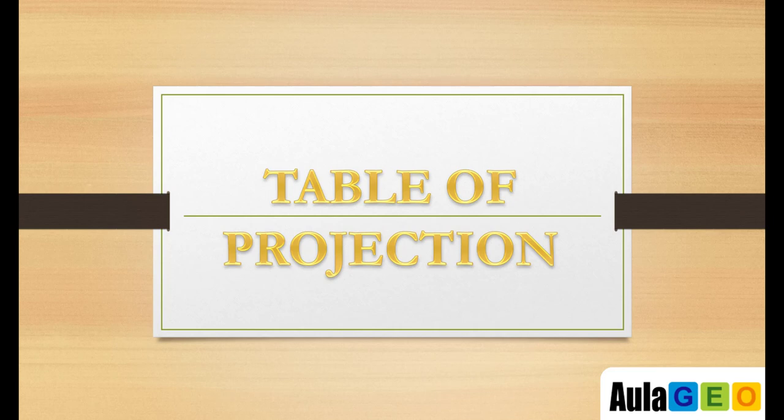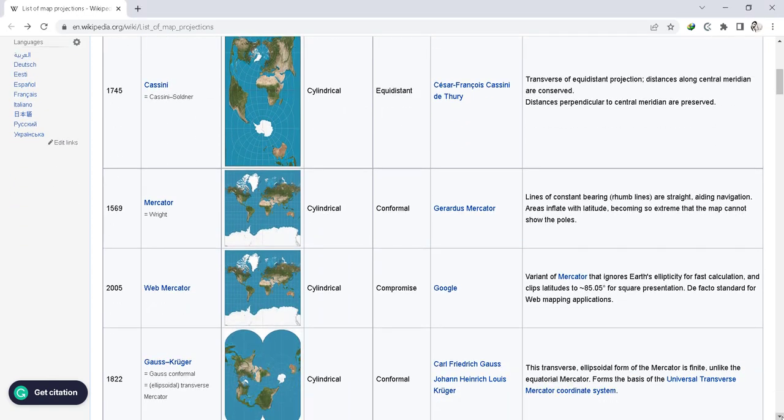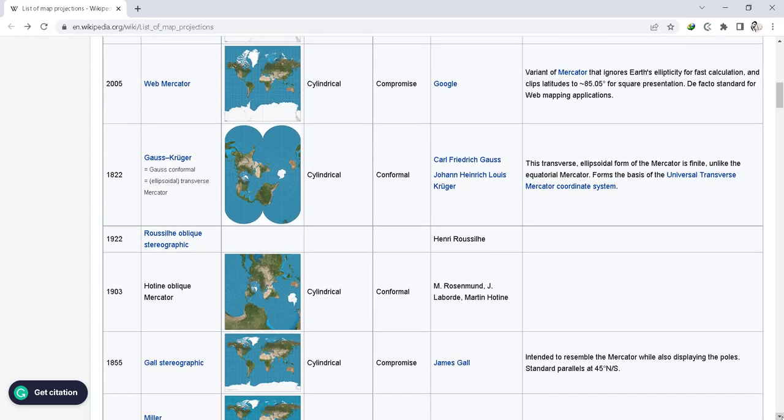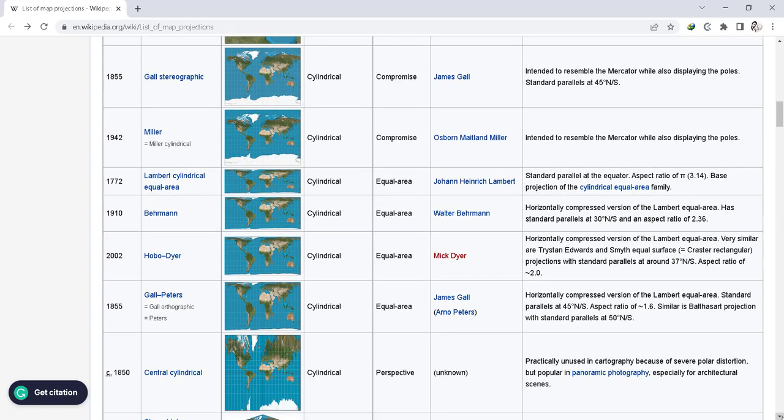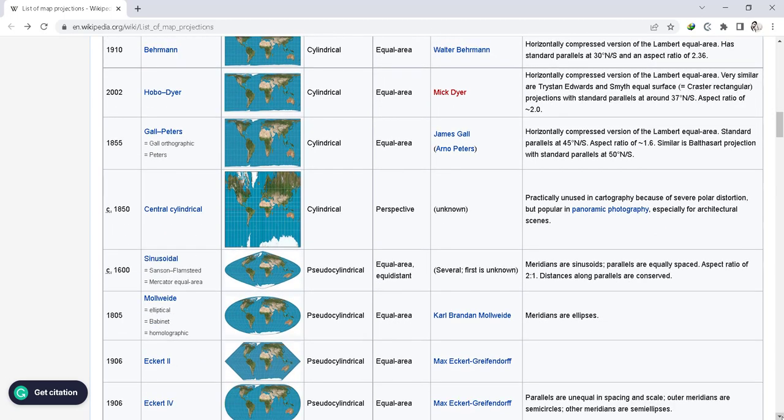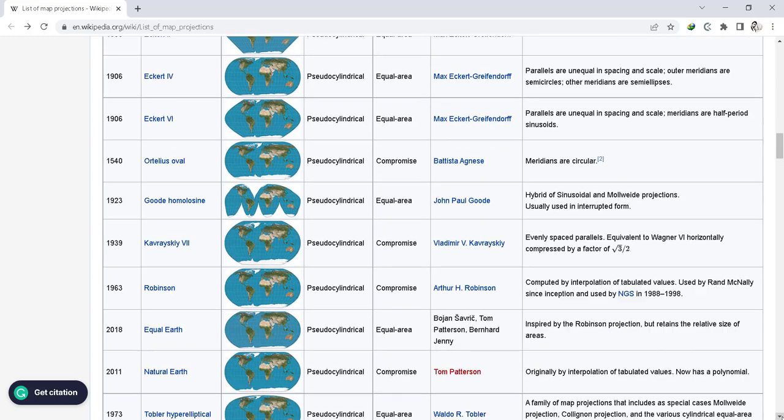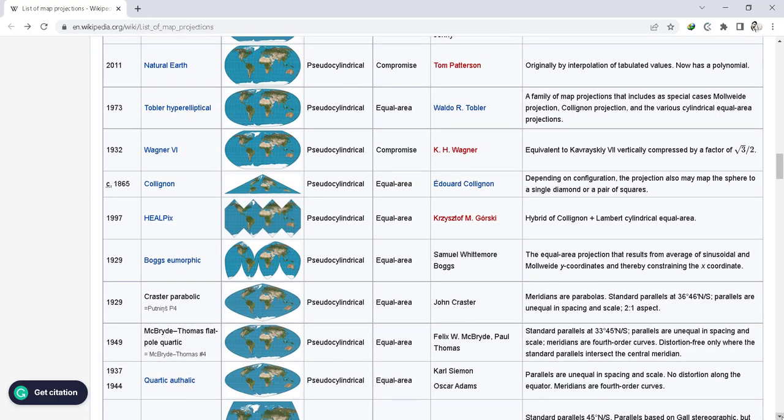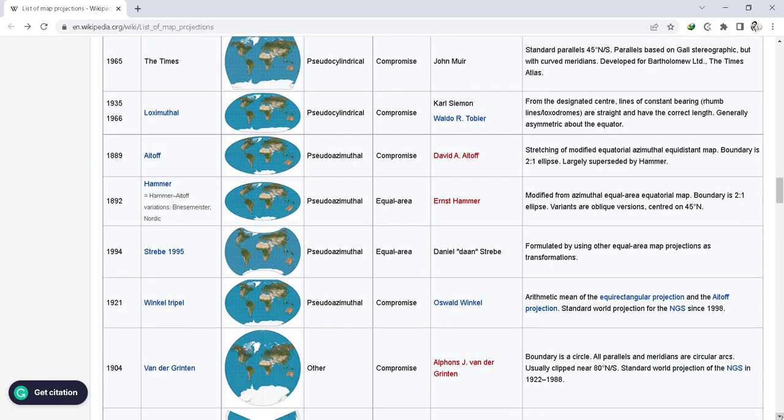Now as we know of different types of projections and their properties, let's review different types of projections in this projection table. The first column shows the year in which this method or map projection was developed. Then you can see the name for the projection, like Mercator, Miller, or Waterman Butterfly. After that we can have a visual presentation of that projection in this column, which leads to the type of the projection in the next column - whether it is cylindrical, azimuthal, or conical, etc.